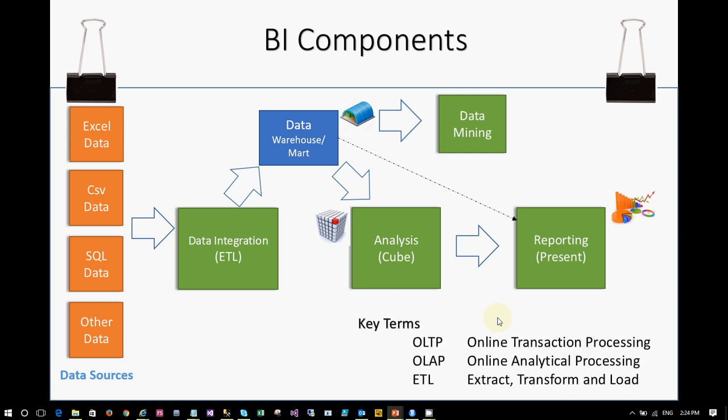The key terms to understand are OLTP and OLAP. OLTP is transaction processing — as and when a transaction happens, data is stored, and that transaction can change at any point in time; it can be cancelled or reverted. If you do analysis on transactional data, your reports won't be consistent — one hour showing profit and the next showing loss, like the share market where data changes every second. OLAP means analytical processing — the data used for analysis is stale data at a particular point in time that does not change. This is called historical data or OLAP data processing.